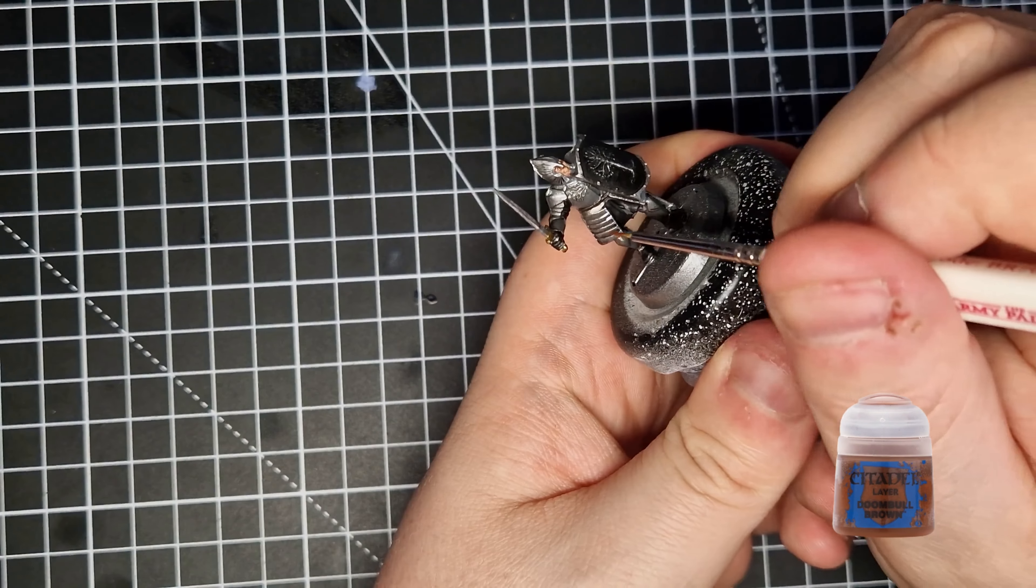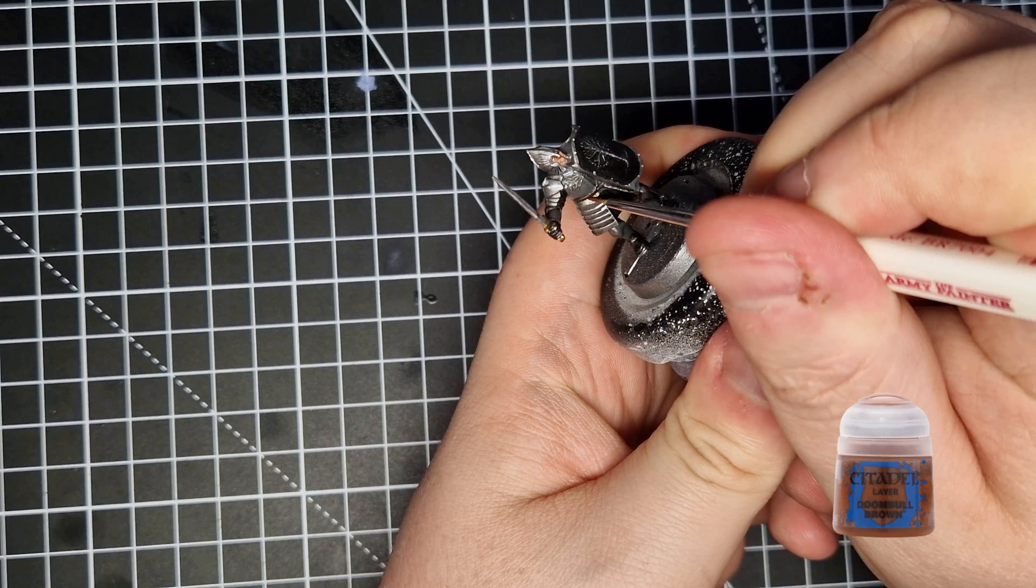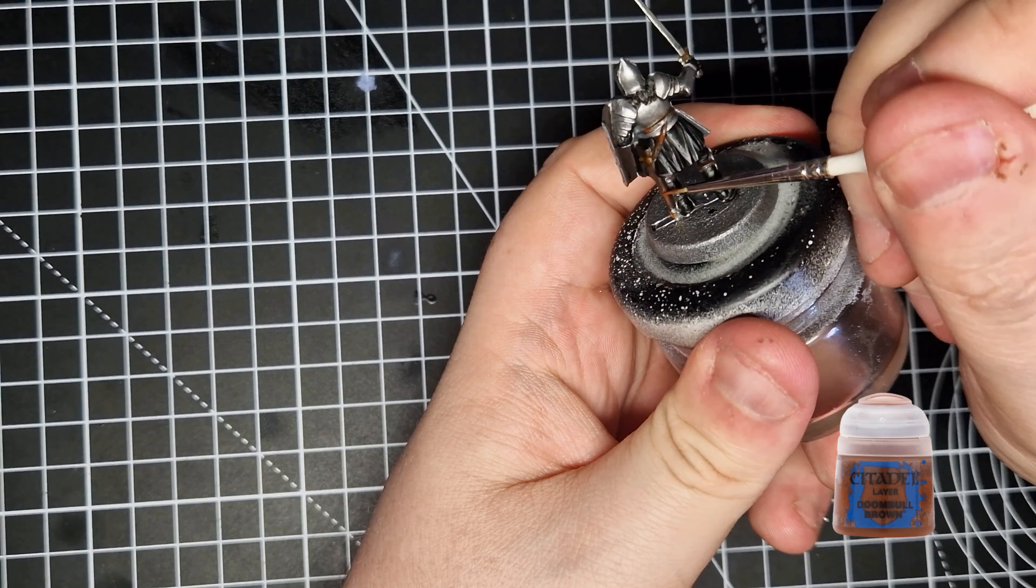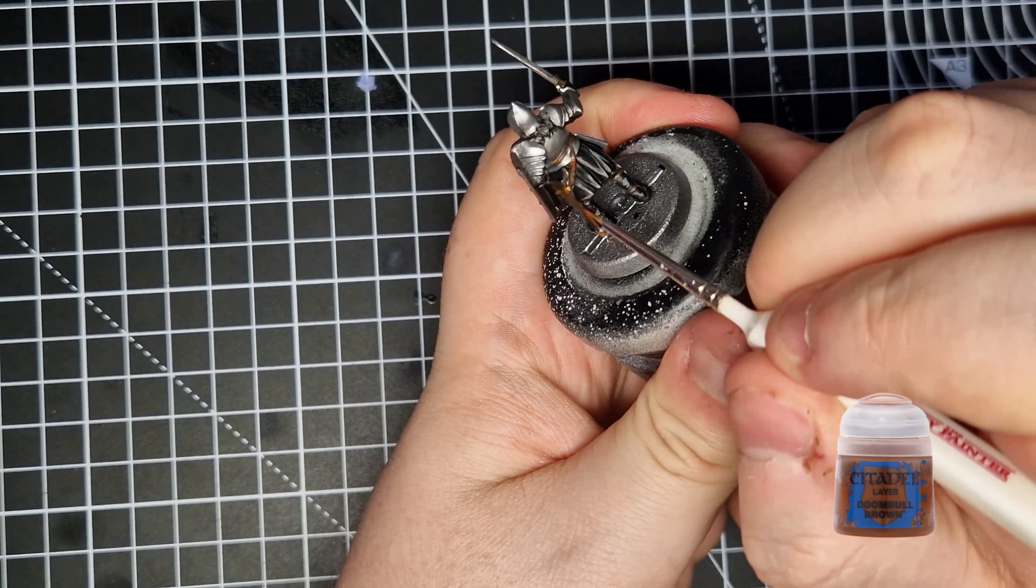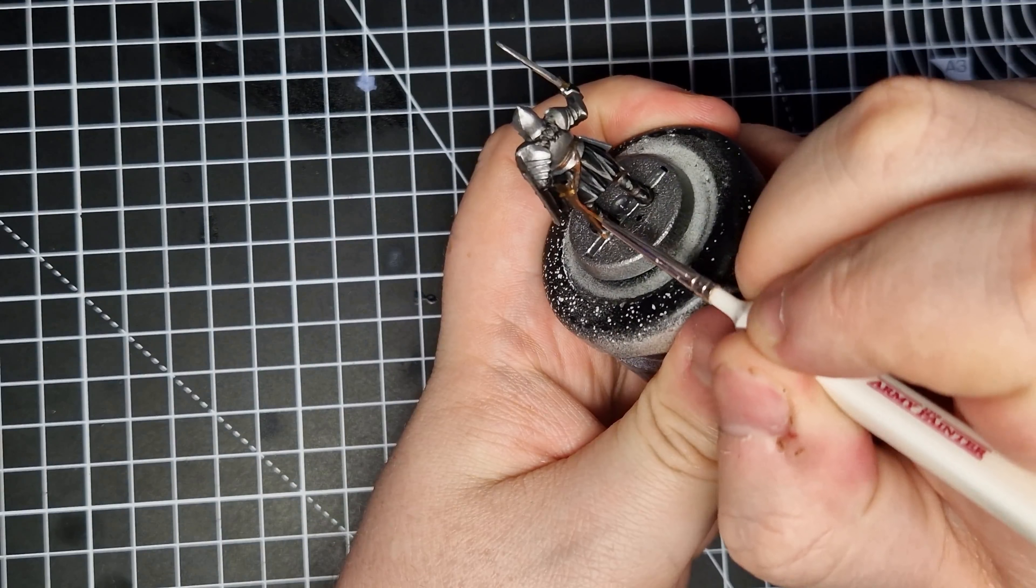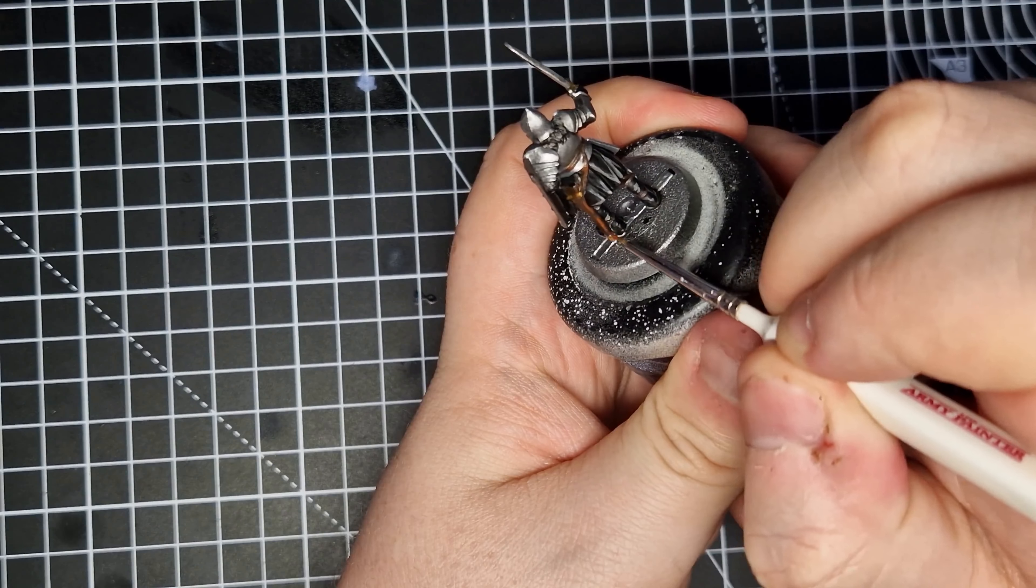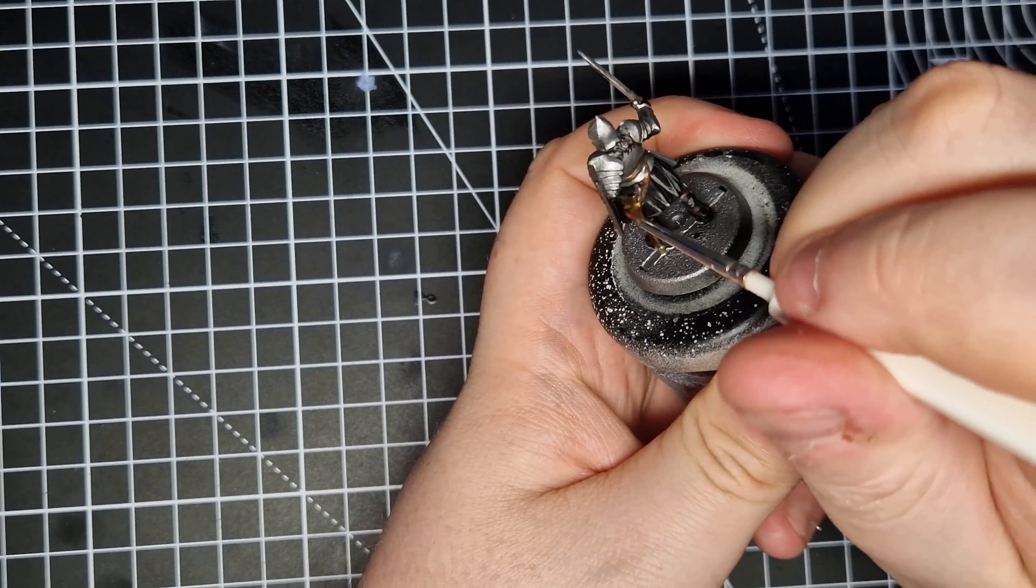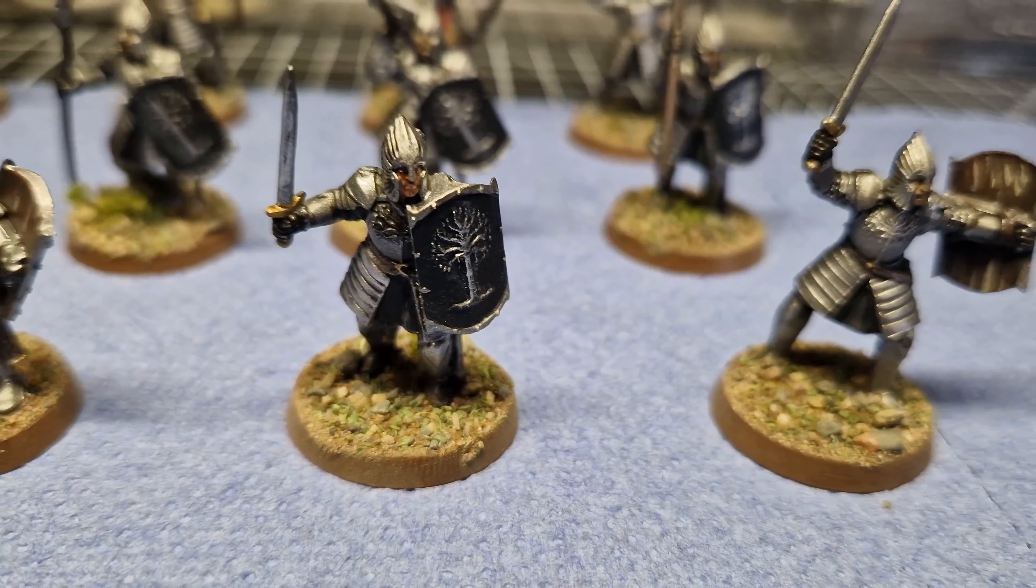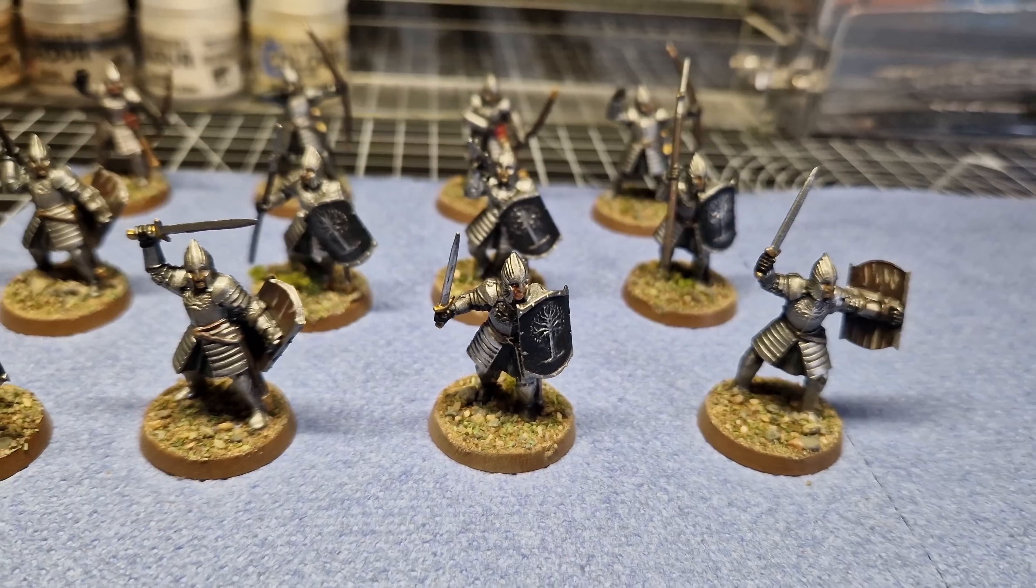And finally our last highlight is going to be Doombull Brown and we're going to use this to highlight all of the leather areas of the mini. So the straps and belts going across the waist as well as the scabbard for the sword will all get a little bit of an edge highlight with this Doombull Brown. It's as easy as that, all you need to do now is base all of your miniatures and sit back and admire them.